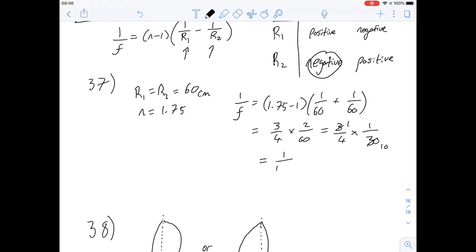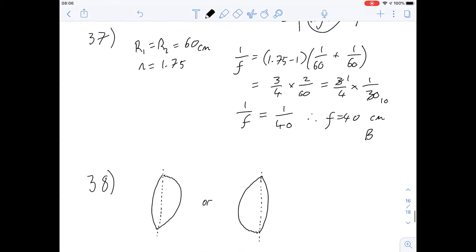So that means you've got 1 over 40, which of course is 1 over f, and that tells us then that f is going to be 40 centimeters, or the focal length will be 40 centimeters. So that gives us an answer of B for question 37.